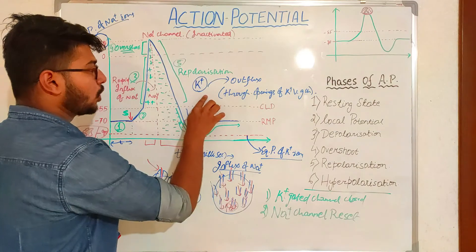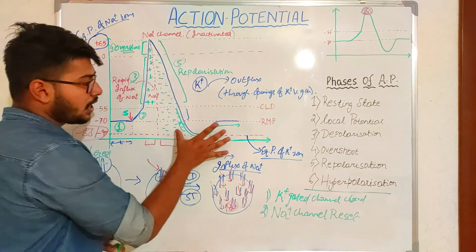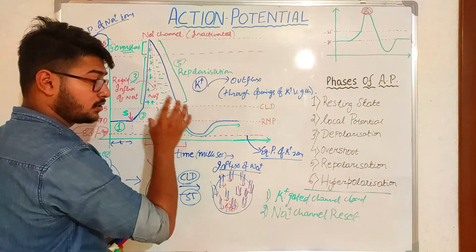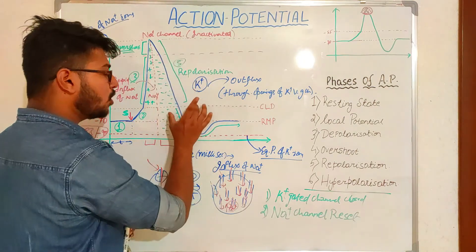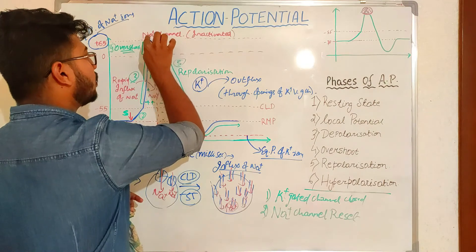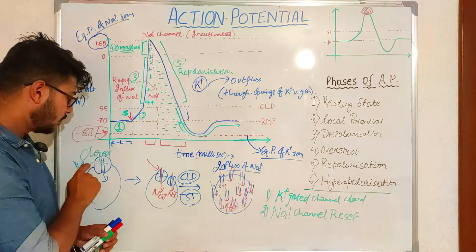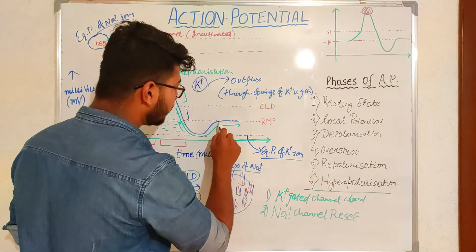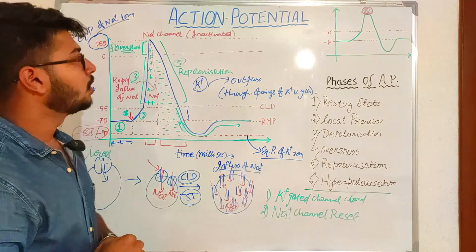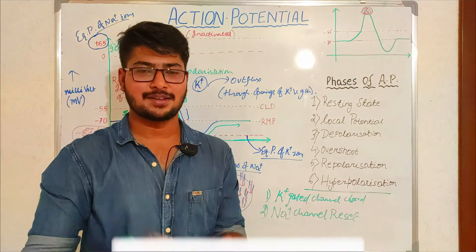Then the repolarization phase occurs: maximum outflux of potassium ions reduces membrane potential from positive back toward negative. The last phase is hyperpolarization — the potassium channels that were open during repolarization close, and the inactivated sodium channels reset to the closed state. After hyperpolarization, the cell returns to a resting state with a membrane potential of minus 70 millivolts. Thank you for watching — if it was helpful, please subscribe and like the channel.